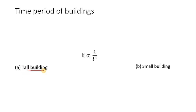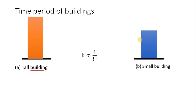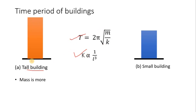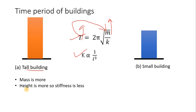For the tall building: mass is more, so time period will be more because time period is directly proportional to mass. Similarly, height is more, so stiffness k will be less because it is inversely proportional to height. As k is less, the time period will again be more.